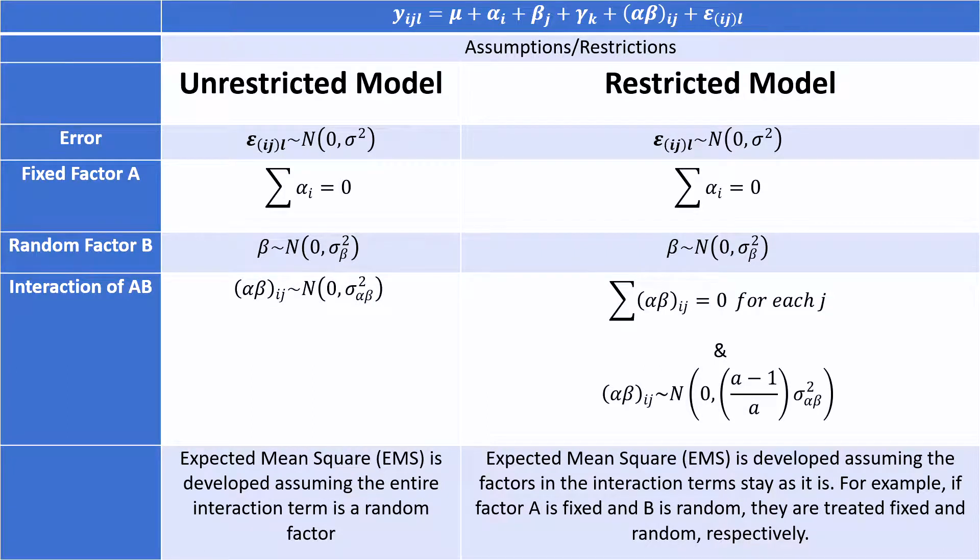For example, this AB interaction. So here, assume that we have factor B random and factor A fixed. So their interaction, the alpha beta subscript i,j, that piece is generally any interaction.